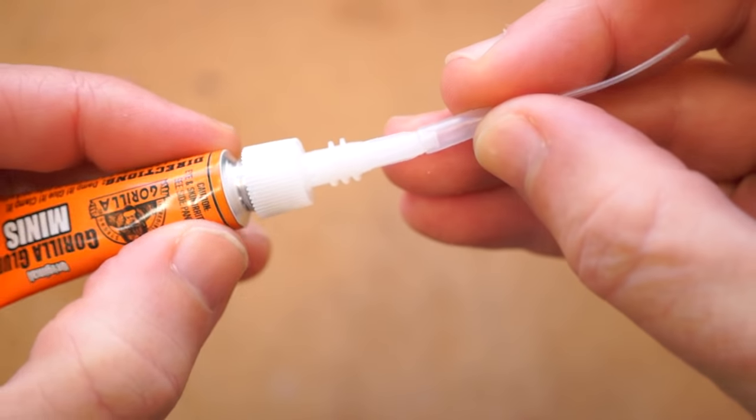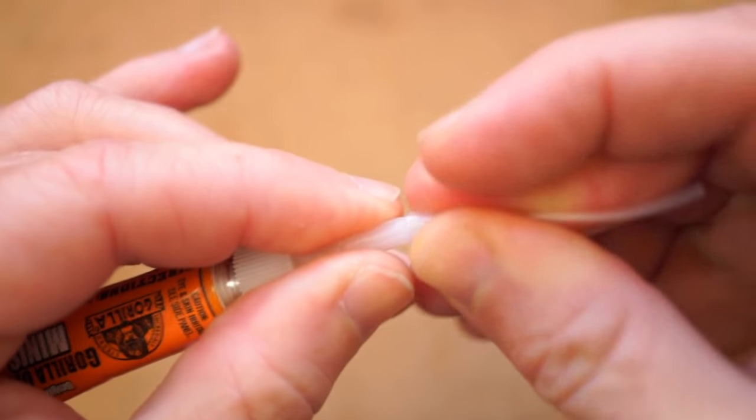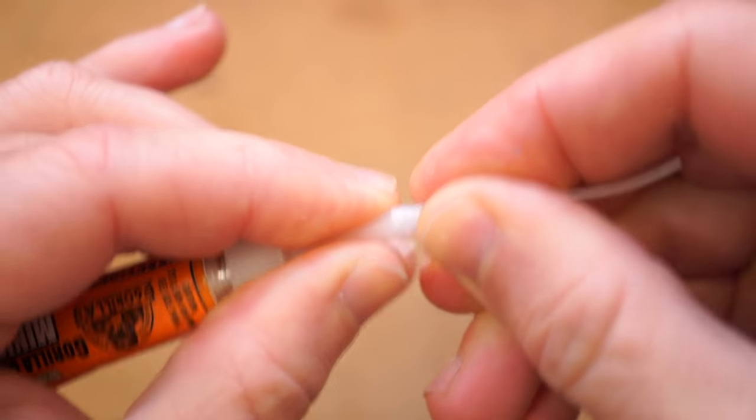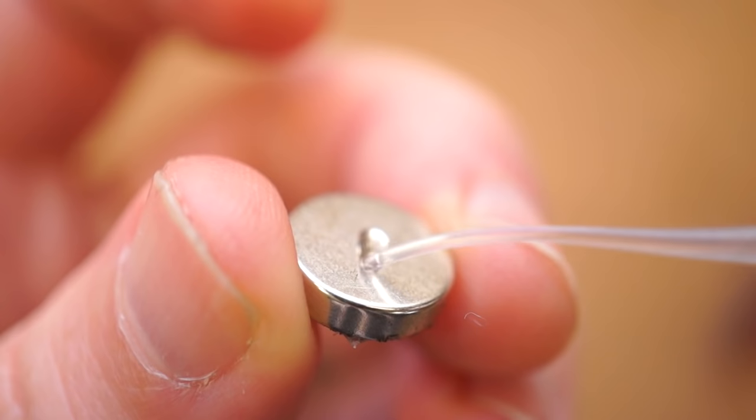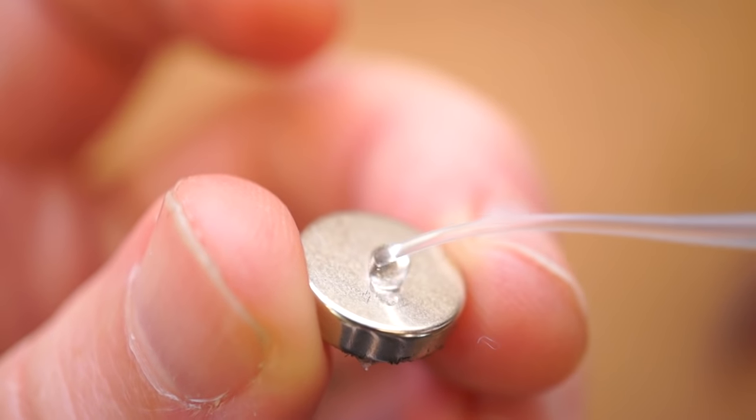CA glue is magical when it comes to creating quick, strong bonds, but it's nearly impossible to clean up when you overdo it or drip some on your project. With these, you can get surgically precise and minimize spills.